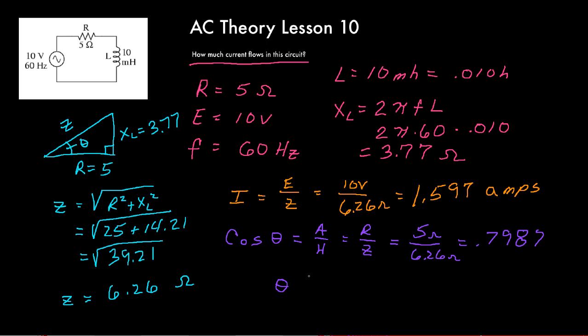To find theta, we need to use the arc cosine function, or the cosine of the negative 1 function on your calculator. So we need to clear everything out, hit second function, cosine. That gives us the arc cosine. Then we're going to punch in 0.7987 and hit equals. That's going to give us a phase angle of 36.99 degrees. We could call that real close to 37 degrees, but we're going to write down what our calculator says: 36.99 degrees.